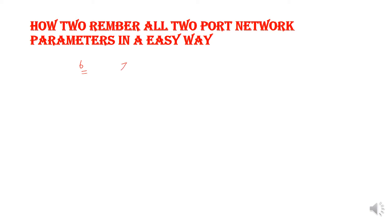The first parameter is Z, the second one is the inverse of Z, that is Y, and the third is the H parameter, the inverse of H is G, the fifth one is the ABCD parameter, and the last one is the inverse ABCD parameter — otherwise known as the transmission parameter.